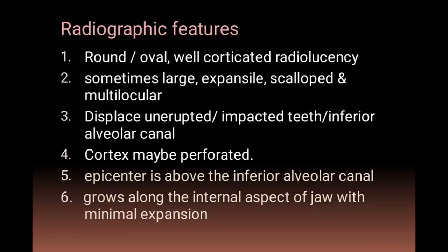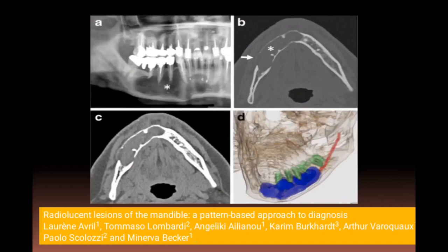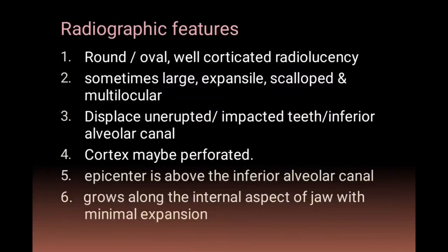Radiographic features of OKC show a round or oval, well-corticated radiolucency that is large, expansile, scalloped, or multilocular. It can displace erupted or impacted teeth and the inferior alveolar canal. There will be perforation of the cortex, and the epicenter is above the inferior alveolar canal. The cyst grows along the internal aspect of the jaw with minimal expansion.